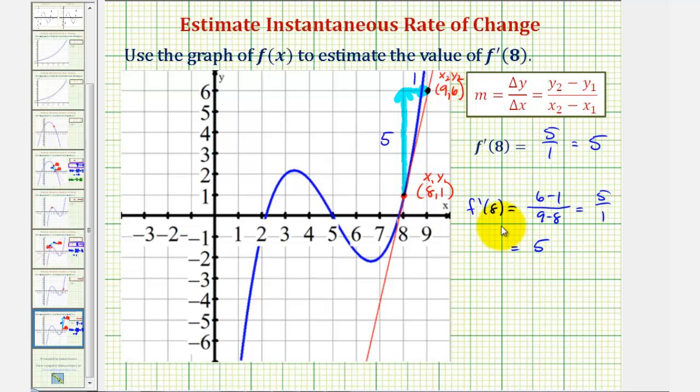So this tells us that when x equals eight, the y value, or function value, is changing at a rate of five units per one unit change of x. Also notice because the derivative is positive at x equals eight, the function is increasing at that point as well. I hope you found this helpful.